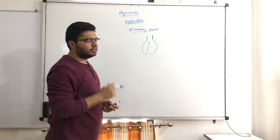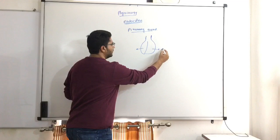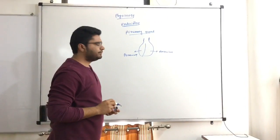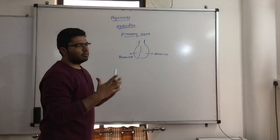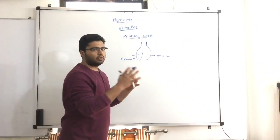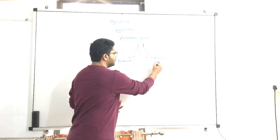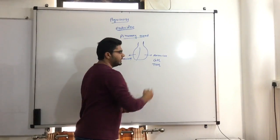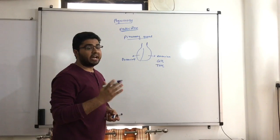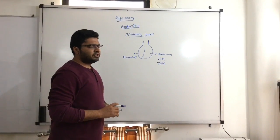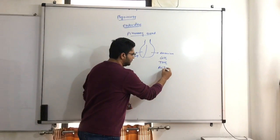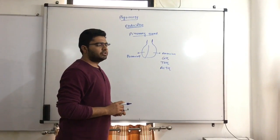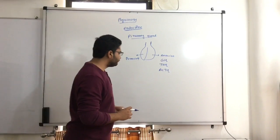The pituitary gland has two components: the anterior part and the posterior part — that is, the anterior pituitary and the posterior pituitary gland. From the anterior pituitary gland, different hormones are produced. These include GH, which is the growth hormone; TSH, the thyroid stimulating hormone, which stimulates the thyroid gland; and ACTH, the adrenocorticotropic hormone, which is released into the blood and reaches and acts on the adrenal gland.